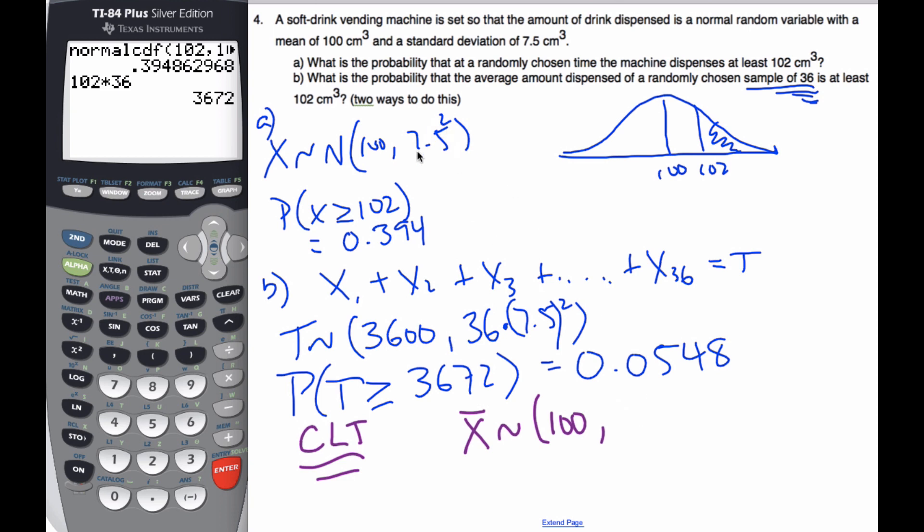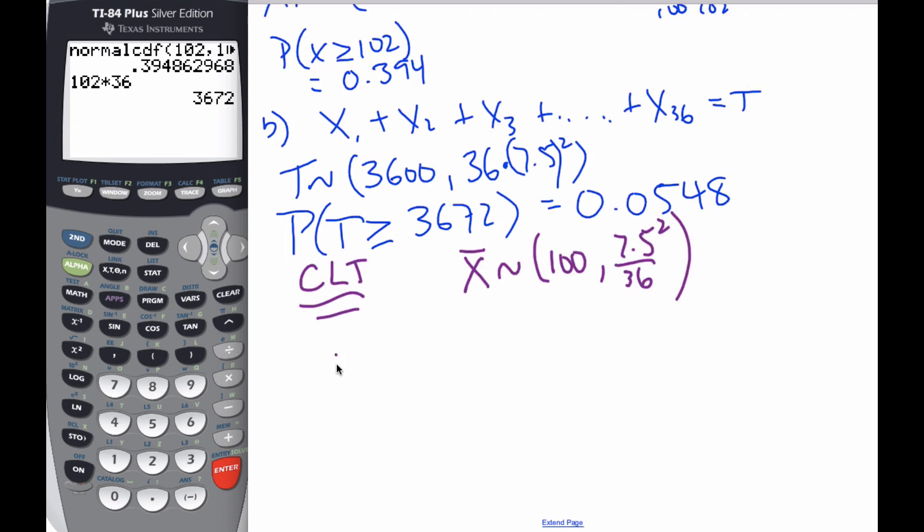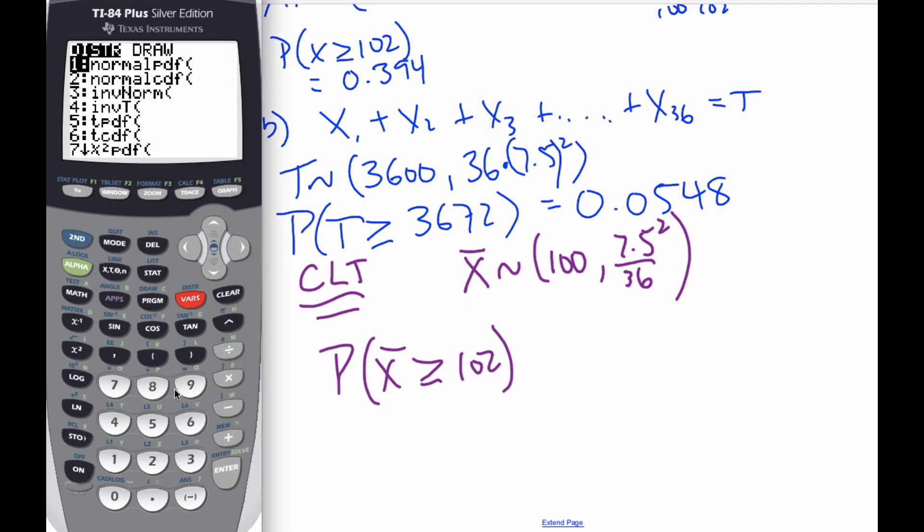Sigma squared, so 7.5 squared divided by n, and n is 36. And so this is going to be my standard deviation. And so now I'm going to find the probability that the X bars are bigger than or equal to 102. When I go to my distributions, normal distribution, it's 102, my upper is still big, but my mean is the same.